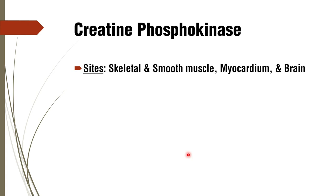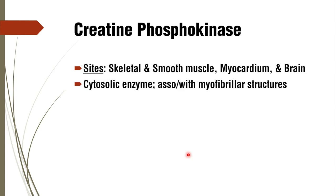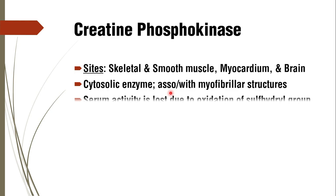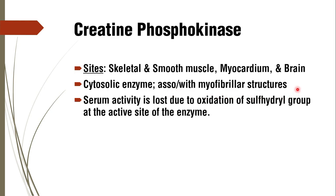Creatine phosphokinase is present in high concentration in skeletal and smooth muscle, myocardium, and brain. It is majorly a cytosolic enzyme associated with myofibrillar structures. Serum activity is lost due to oxidation of sulfhydryl groups at the active site of the enzyme. Its normal reference range is 4 to 60 international units per litre.